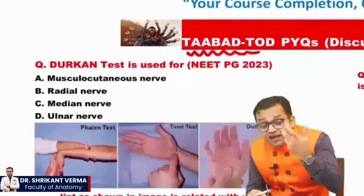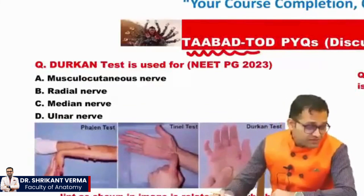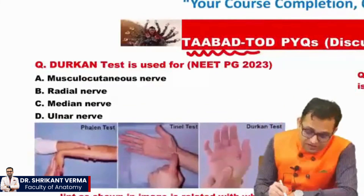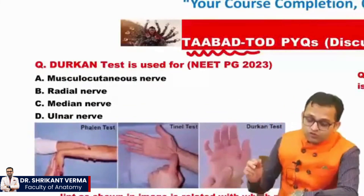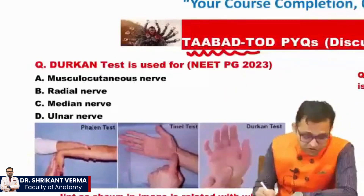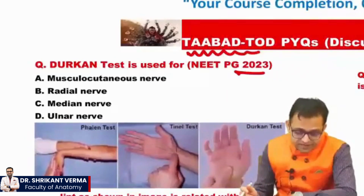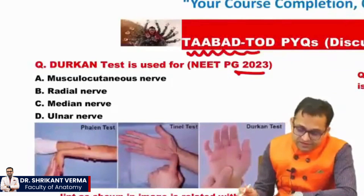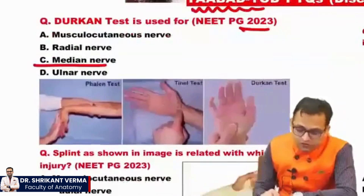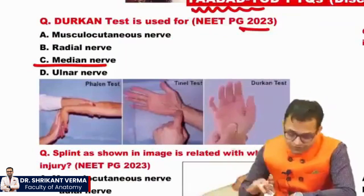We will discuss which questions come from here. The Durkan test is used for — this is a NEET PG 2023 question. The Durkan test is a test for the median nerve, so we have to see the nerve.